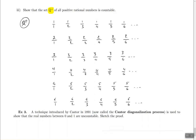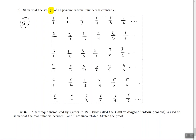Our goal is to count every number in this list exactly once. Keep in mind this list extends down forever and to the right forever. I'm going to start with 1 over 1 — that's the first number. Then I go across and 1 half is number 2. Then I go down diagonally and 2 over 1 is different from the previous numbers, so it's number 3. So: number 1 is 1 over 1, number 2 is 1 half, number 3 is 2 over 1.